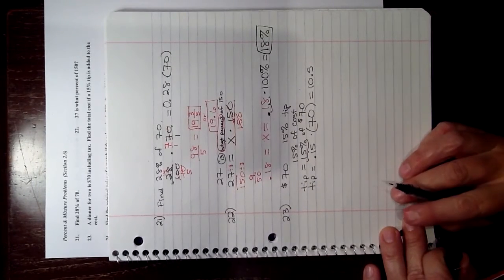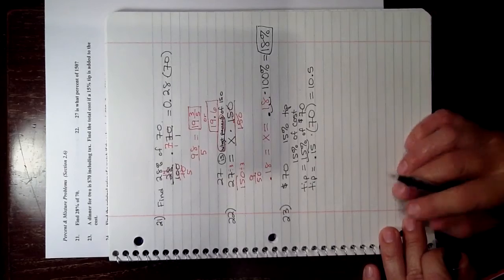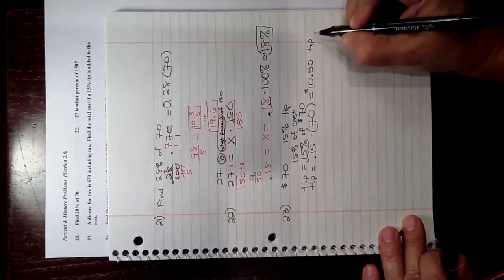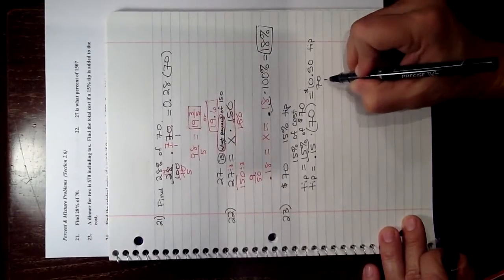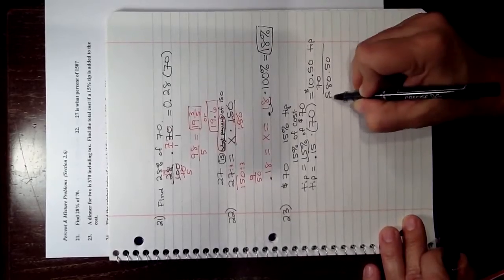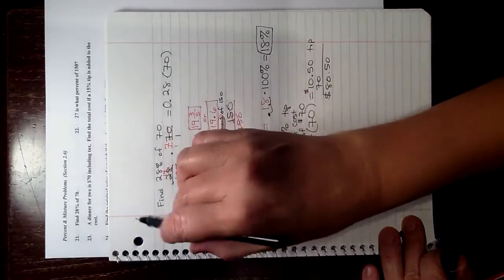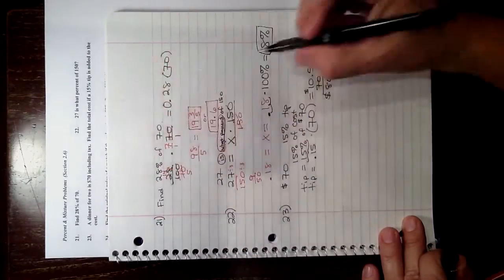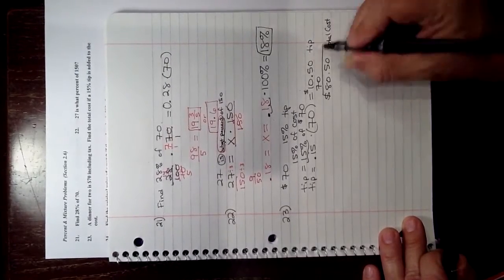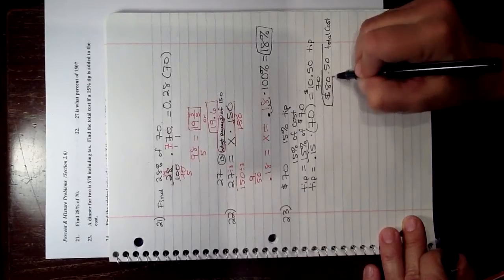And you add $10.50 tip, then we have $80.50 total that needs to be paid. So find the total cost, and the answer to that is it's $80.50.